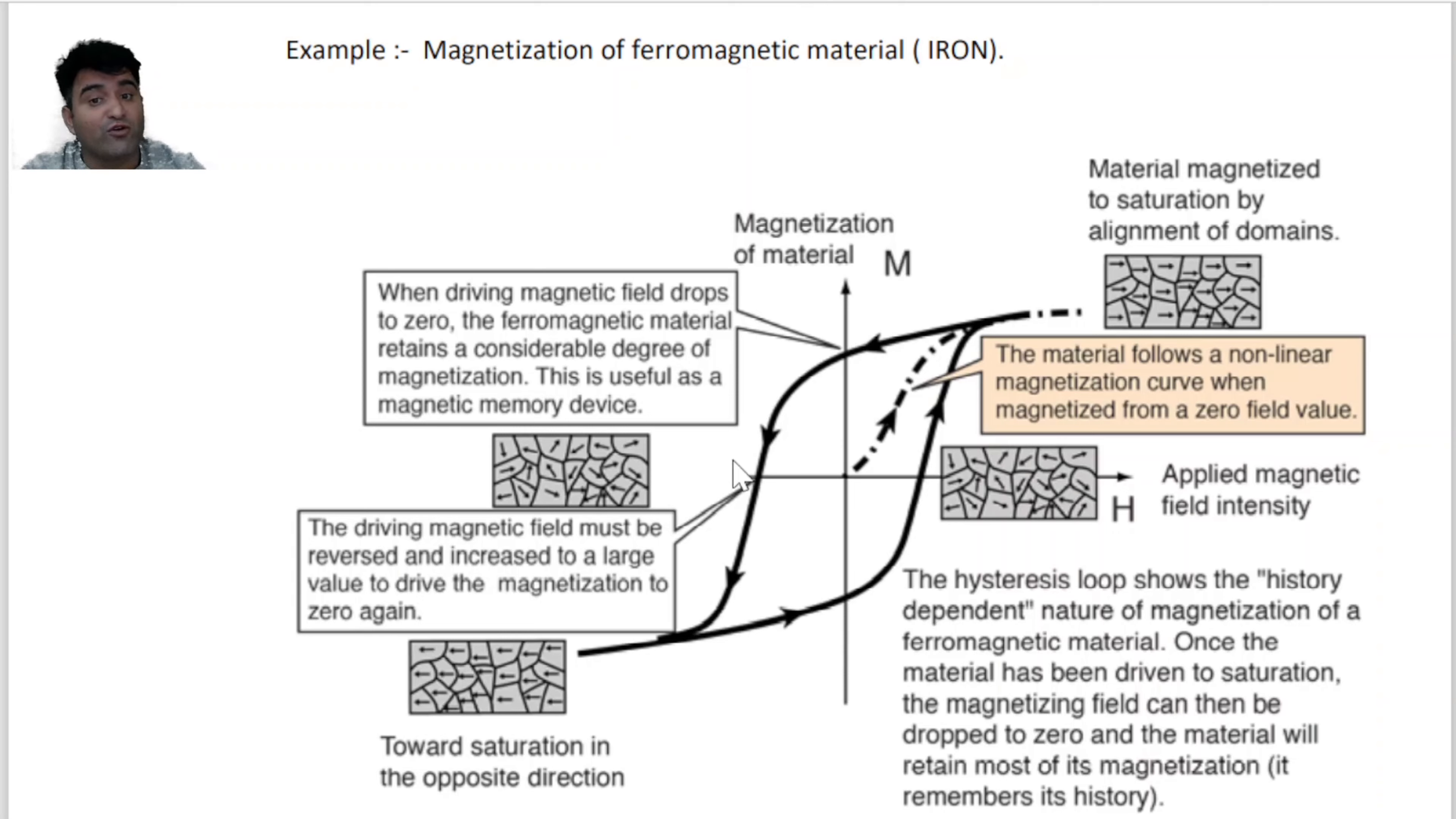Is magnetization ko zero karne ke liye, zero pe lane ke liye, hum applied magnetic field ko reverse direction me apply karenge. Same for this case - humne applied magnetic field ko reverse direction me apply kiya hua hai. Jab hum applied magnetic field ko forward direction me apply karna shuru karenge, to yeh path follow karegi.